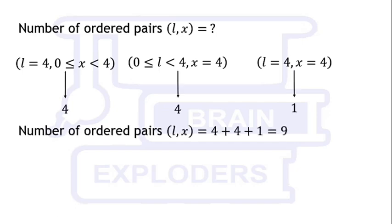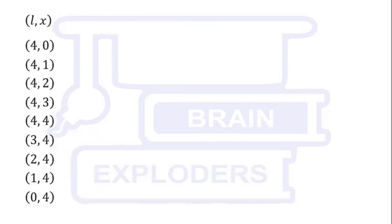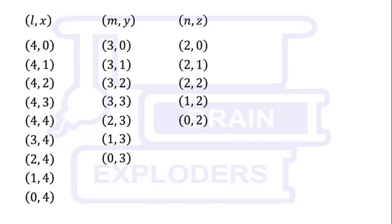Similarly, for (m,y) and (n,z) there are 7 and 5 ordered pairs respectively. All these pairs are shown here in three lists.